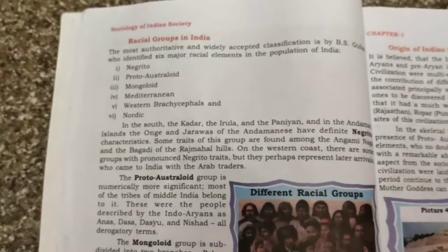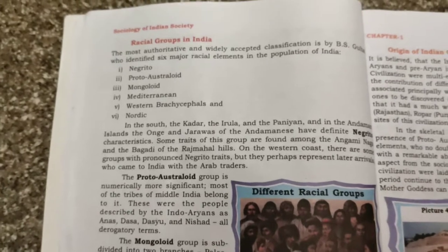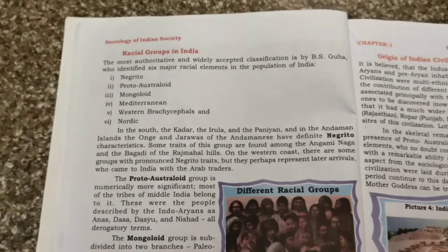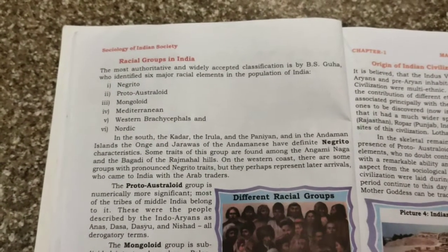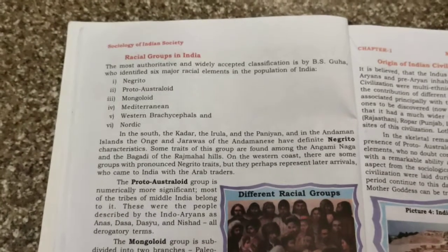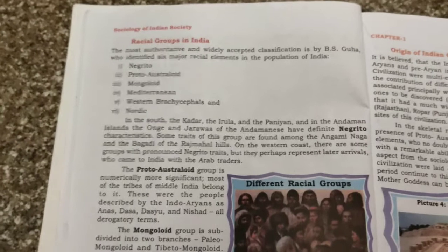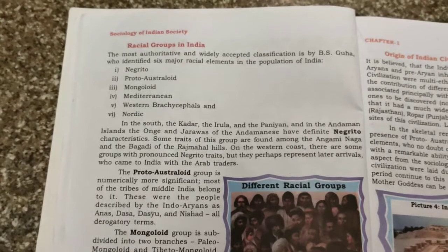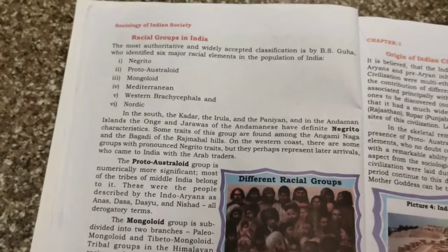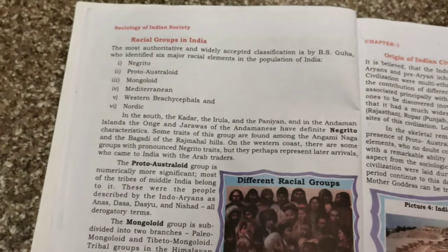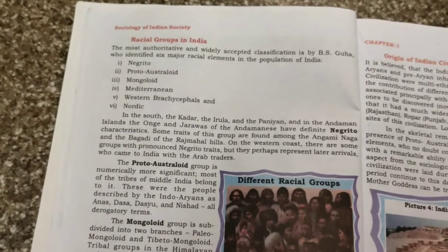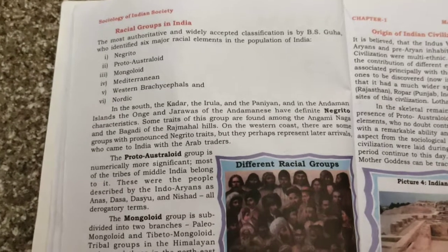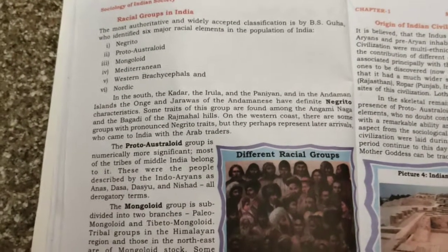Moving on to the racial groups of India — what are the different types of racial groups in India? The most authoritative and widely accepted classification by B.S. Guha identifies six major racial elements in the population of India: Negrito, Proto-Australoid, Mongoloid, Mediterranean, Western Brachycephalids, and Nordic. In the south — the Kadar, Irula and Paniyans — and in the Andaman Islands — the Onge and Jarwas — have been identified as Negrito.